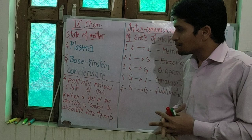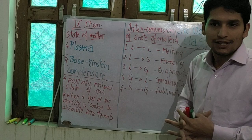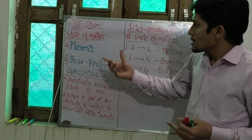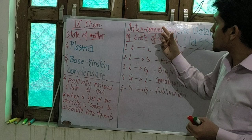Till now we have discussed about the 3 states of matter: solid, liquid and gas. Today we will discuss about 2 more states of matter — plasma and Bose-Einstein condensate. Apart from this, we will discuss about the interconversion of state of matter.